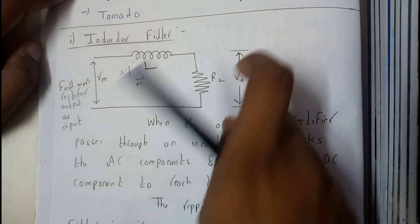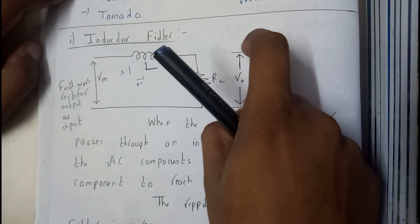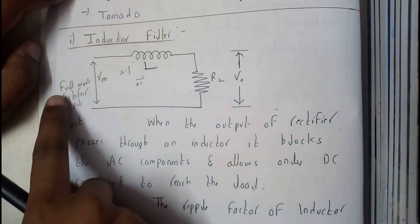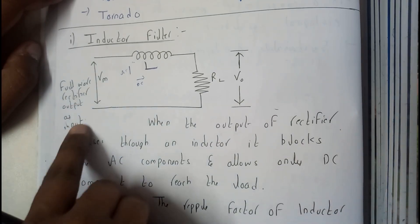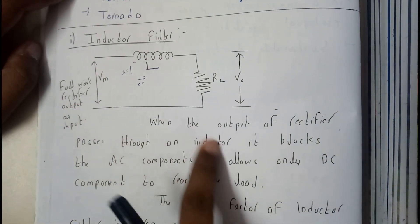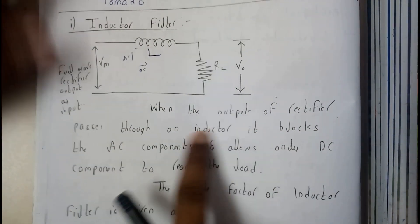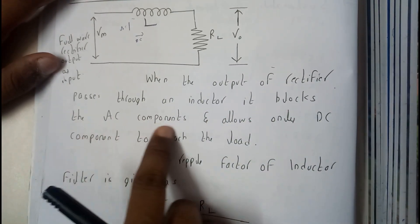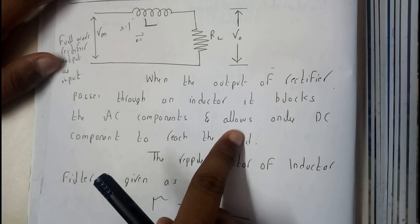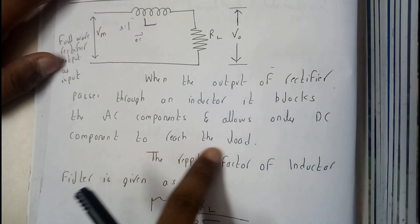It's going to block AC and allow DC to the load so that we get a large amount of DC content at the output. The input is the output of the full wave rectifier. When the output of a rectifier passes through an inductor, it blocks the AC component and allows only DC component to reach the load.